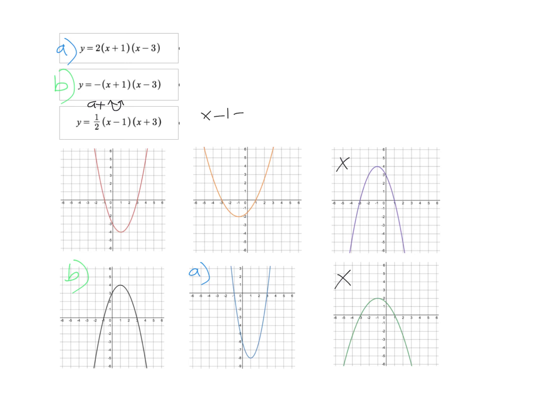Let's find the x-intercepts next. So x minus one equals zero. Add one. And we get the first x-intercept at x equal positive one. x plus three equals zero. Subtract your three on each side. And we get x equal negative three.